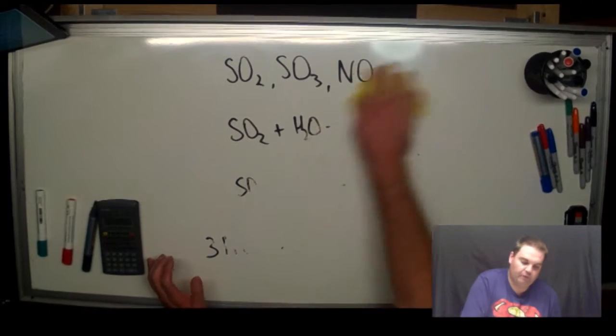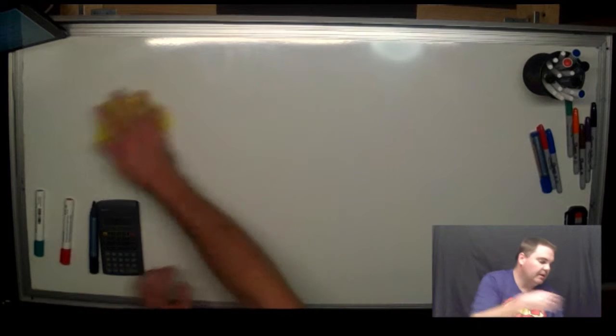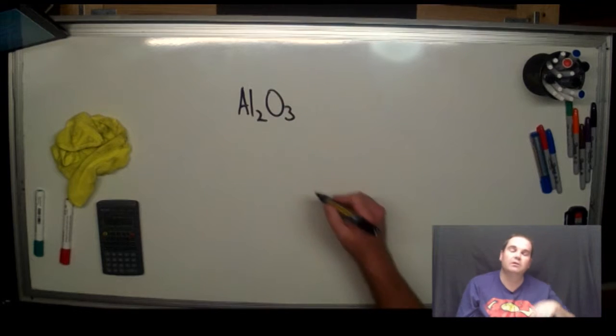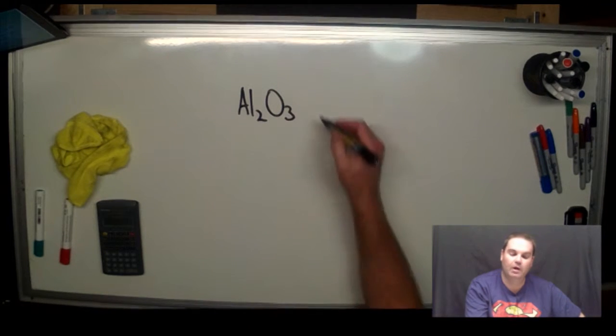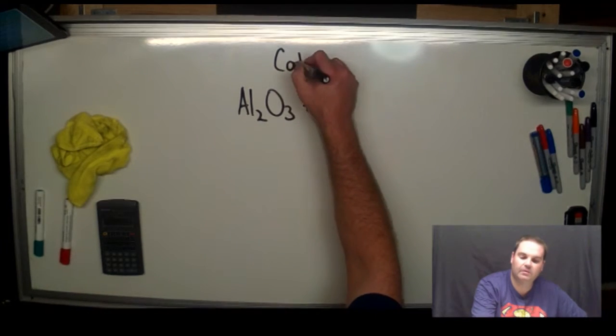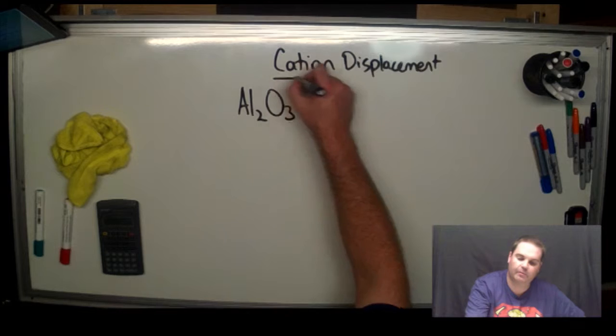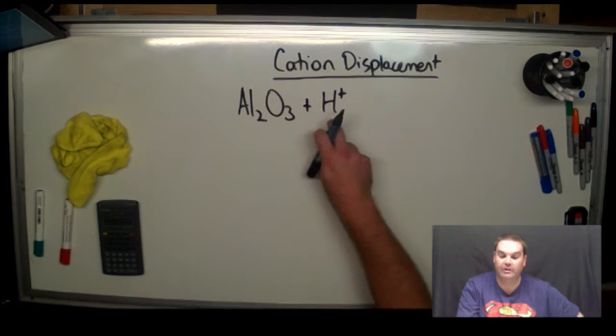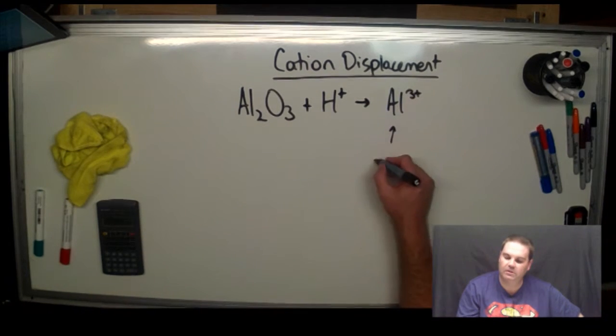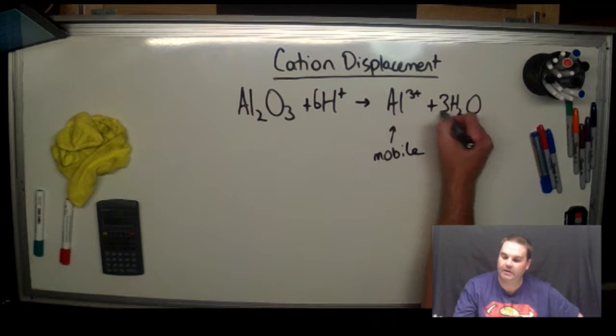So I mentioned the leaching of cations and I'm going to finish on this because this is the real major issue. In the soil, you've got aluminium oxide. Aluminium is a very reactive metal, so it likes to be in a combined form. That's quite stable. But when you introduce hydrogen ions, you get what's called a cation displacement. So this is where one positive ion takes the place of another one. You've got aluminium ions, you bring in hydrogen ions and you actually make these aluminium ions mobile, and you get water as a result, balance it up with a 6 there and a 3 there.